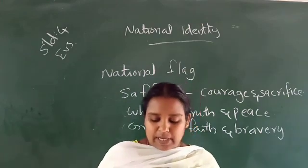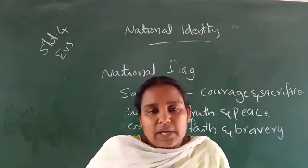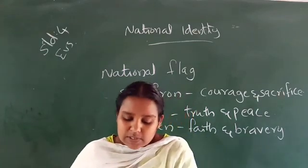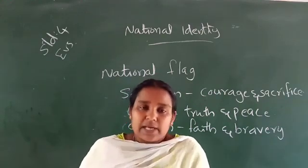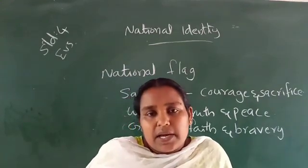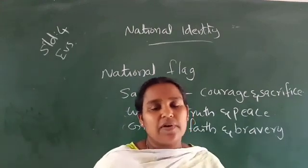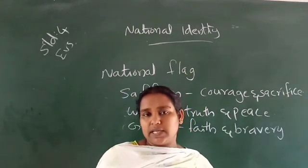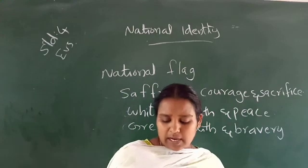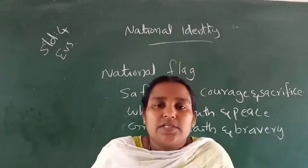Next are the National Symbols. The national animal is the tiger. The national bird is the peacock. The national flower is the lotus. The National Flag, Emblem, Anthem, song, and other symbols give our national identity. So that's all. We can stop in this class and continue in our next class.